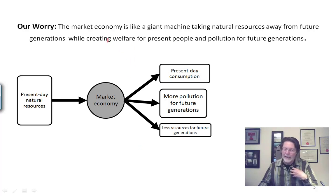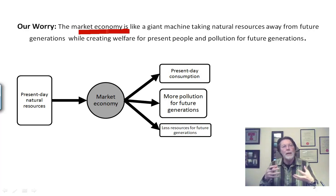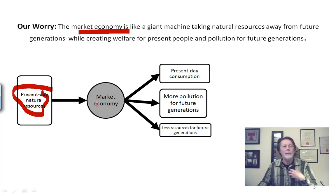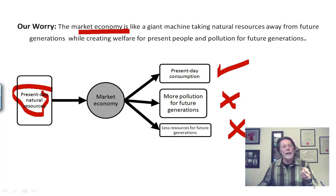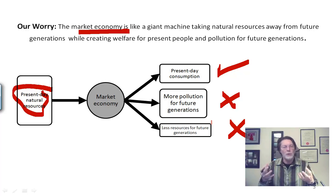The worry is that the market economy — this thing that we're trying to justify — is like some sort of giant machine. It takes present-day natural resources and runs them through the market economy, producing present-day consumption, which is a good thing. But it also produces pollution for future generations and leaves fewer resources for future generations. We're using up the world now. This is our worry. What can we do about this, and what are some of the economic tools that could be used to resolve these problems in an ethical way?